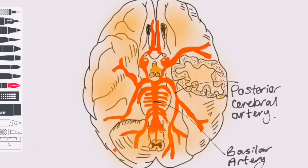Now we can piece this information together to predict the symptoms of a PCA stroke. The content already covered should have given you enough knowledge to work out the likely symptoms given the location of the infarct. It should be mentioned that PCA strokes can present with more generalised symptoms, including headache, dizziness and confusion. Remember, not all strokes present as they do in the textbook.